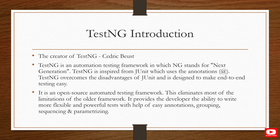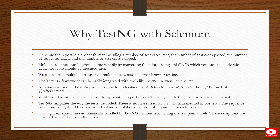Easy annotations, grouping, sequencing, and parameterizing play a major role in current web automation, mobile automation, and backend automation. Grouping and parameterization play a major role, and I will discuss these in upcoming tutorials.